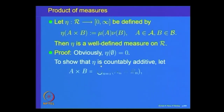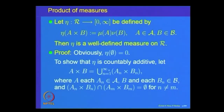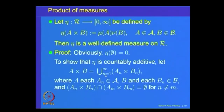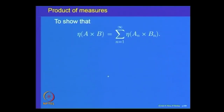To show countable additivity, suppose a rectangle A×B is represented as a disjoint union of rectangles Aₙ×Bₙ, n=1 to ∞, where Aₙ ∈ A and Bₙ ∈ B and the rectangles are pairwise disjoint. We want to show η(A×B) = Σₙ η(Aₙ×Bₙ).